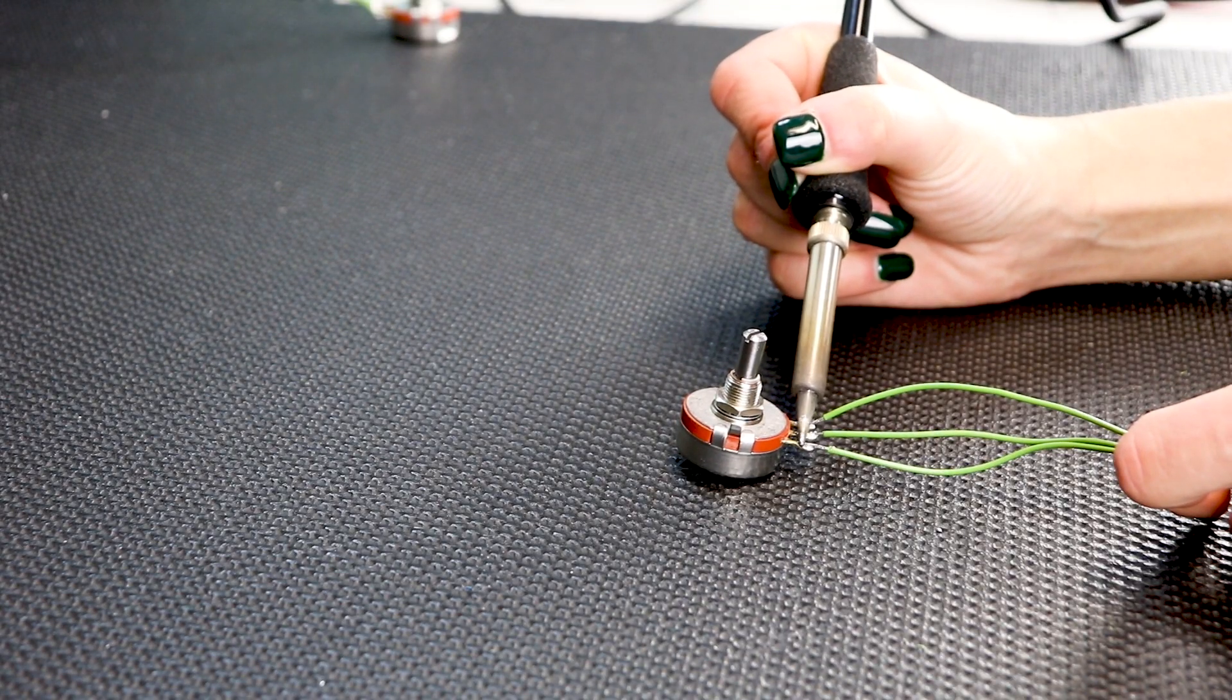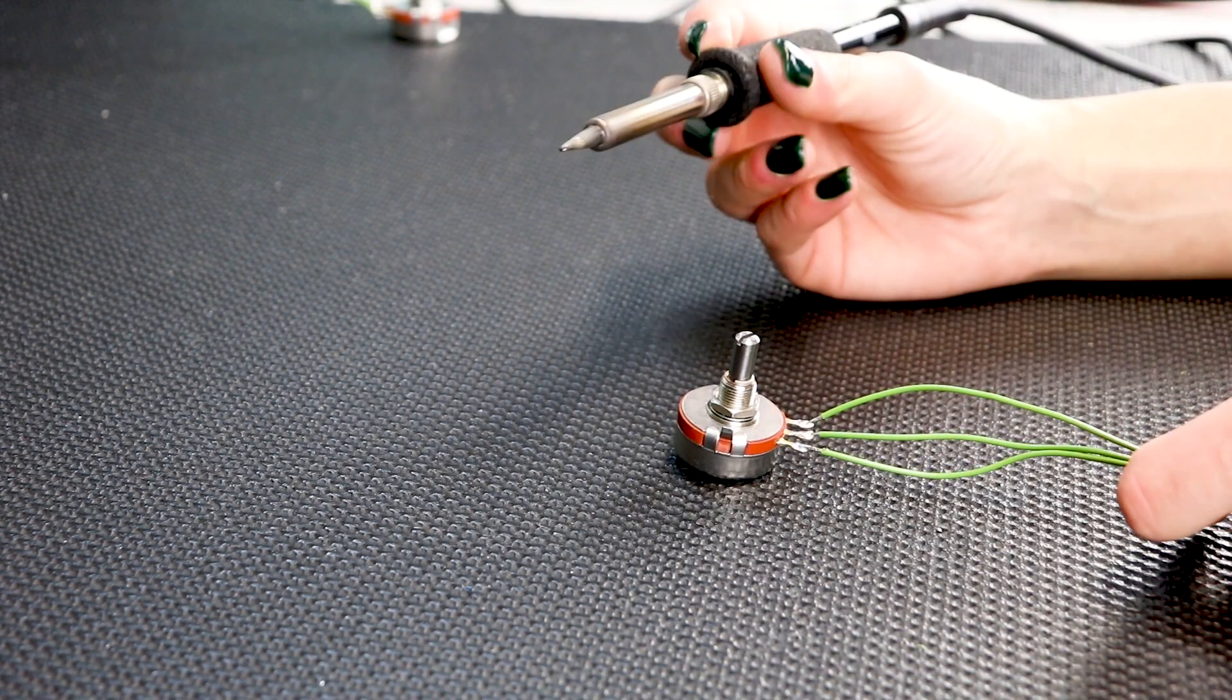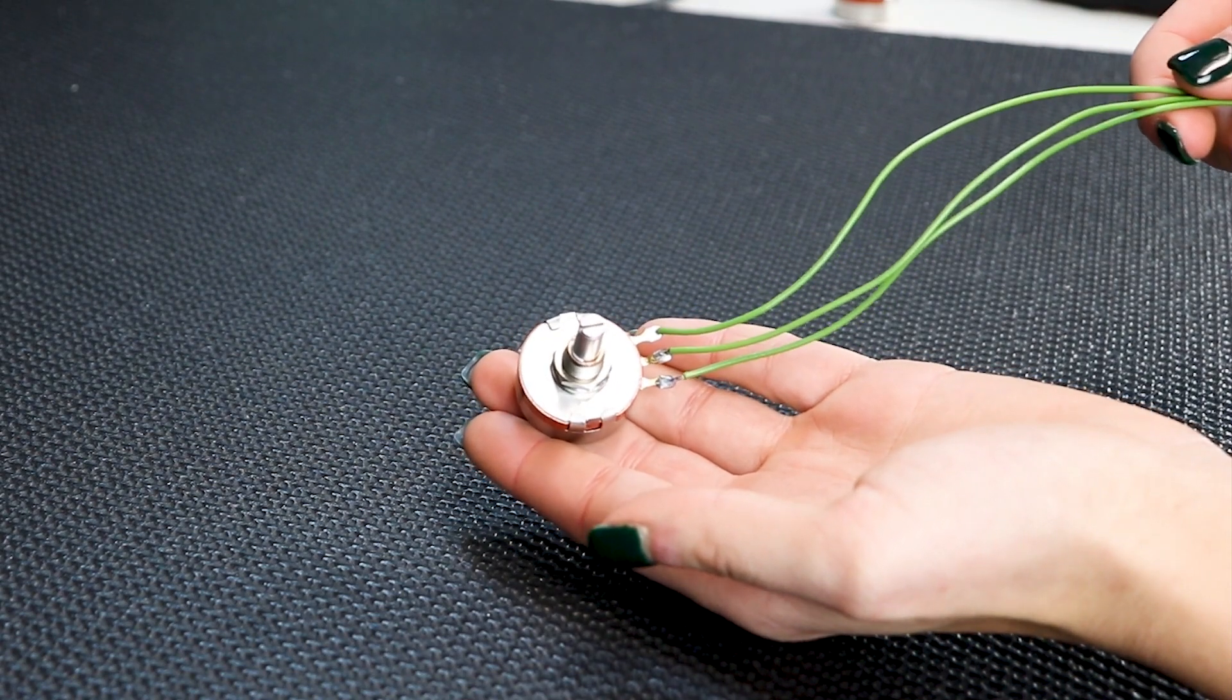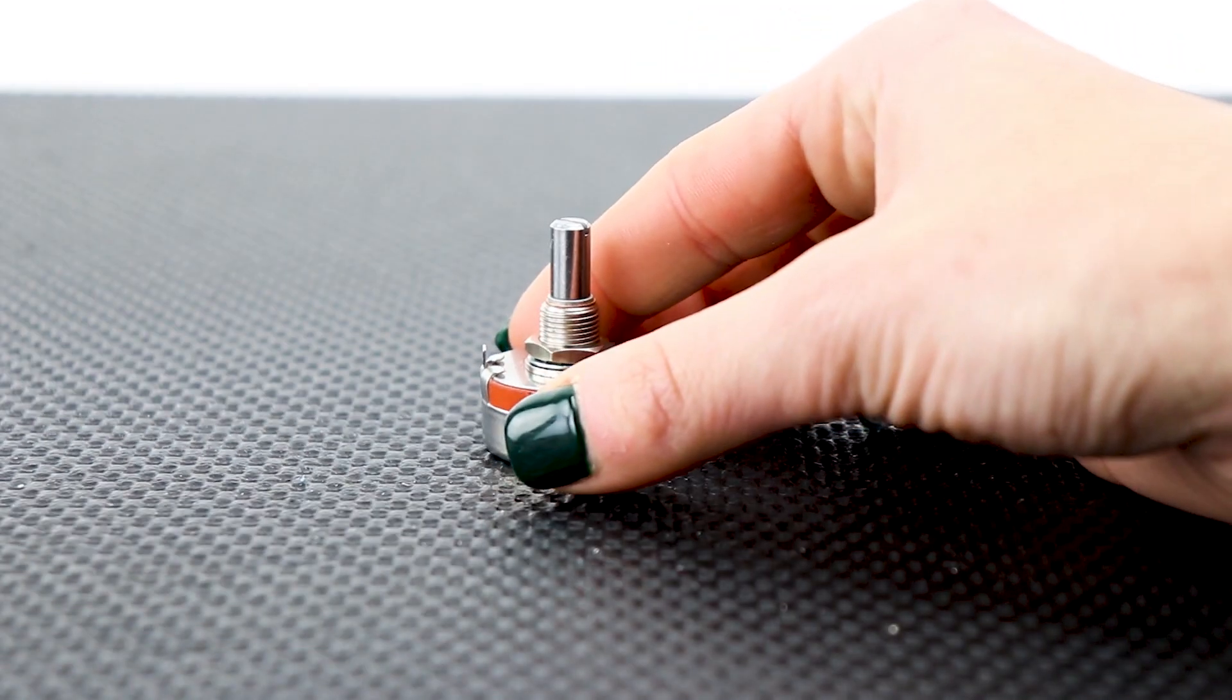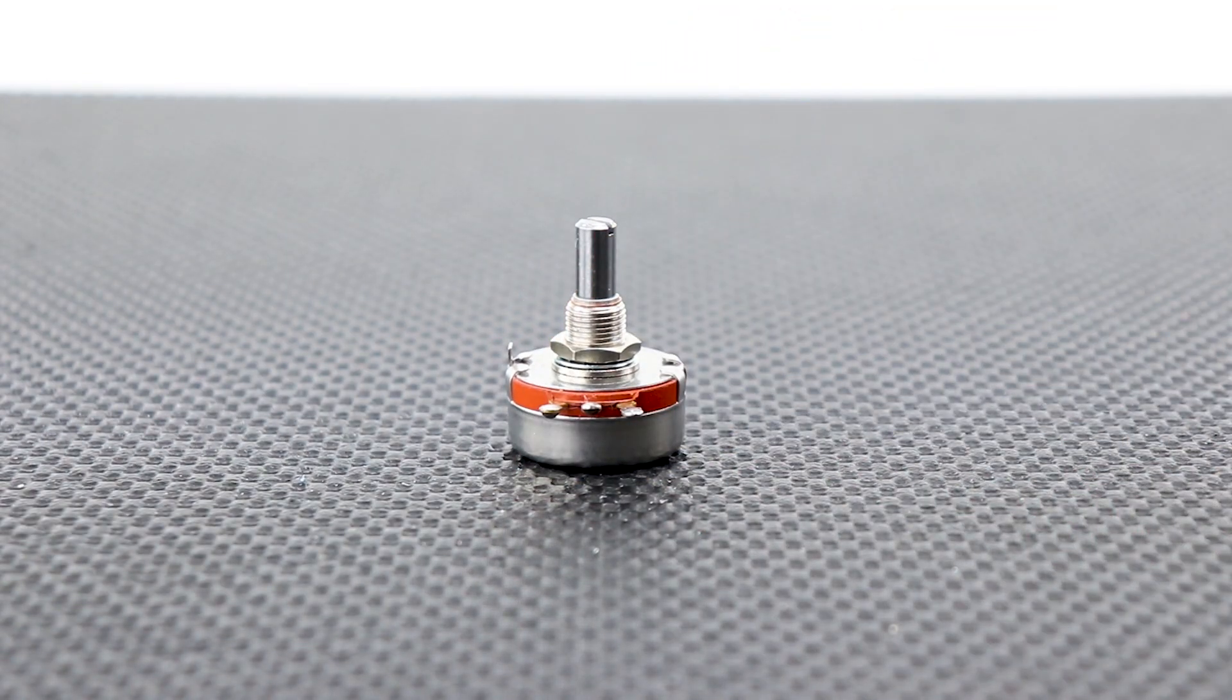Wiring a potentiometer is a straightforward process for anyone with basic experience in electronics. Begin by identifying the three terminals on the pot. Position it so that the shaft is facing towards the ceiling and the three terminals are facing towards you.